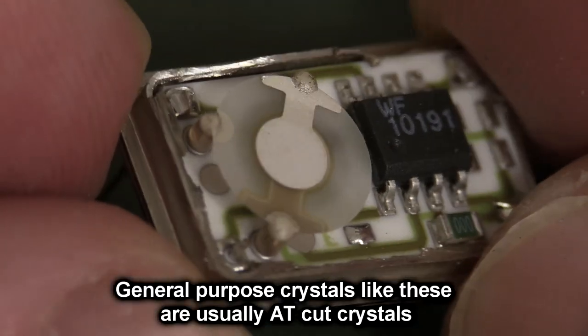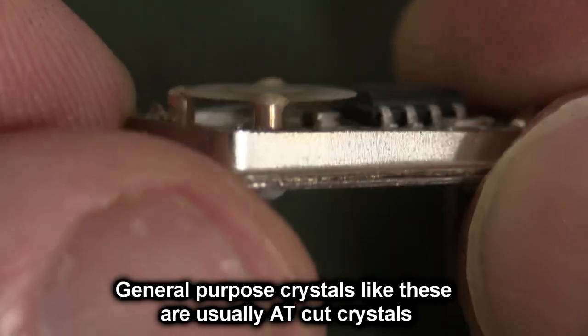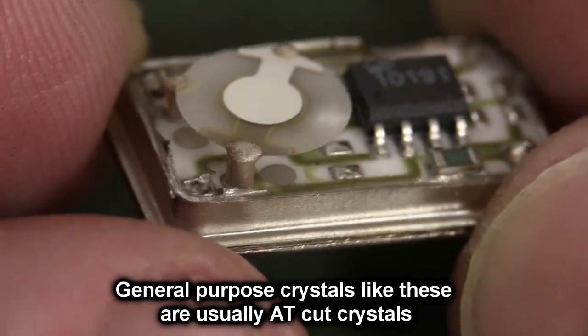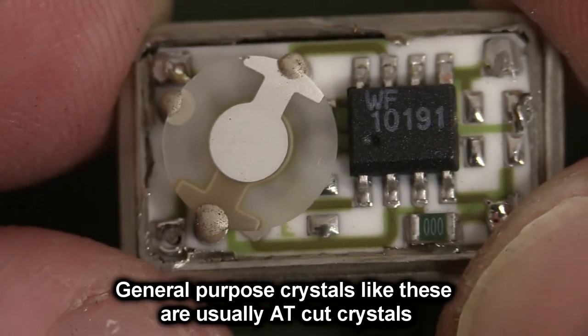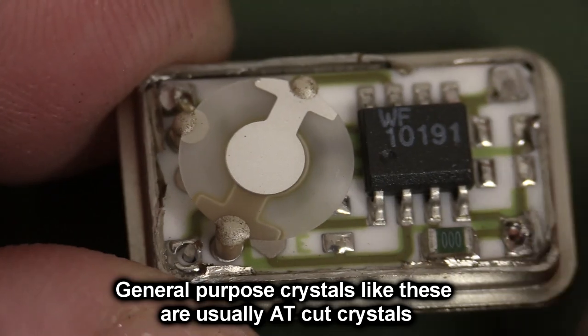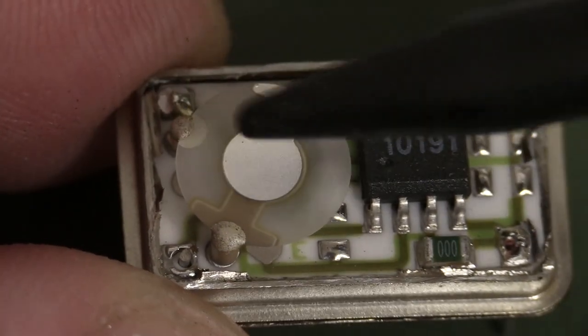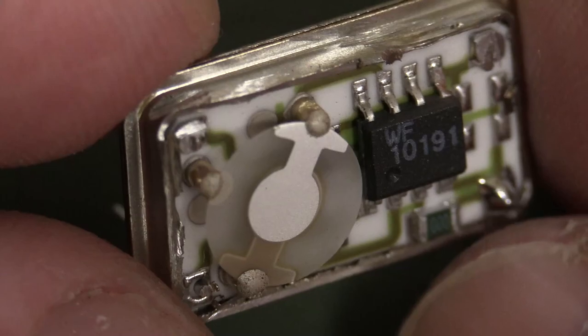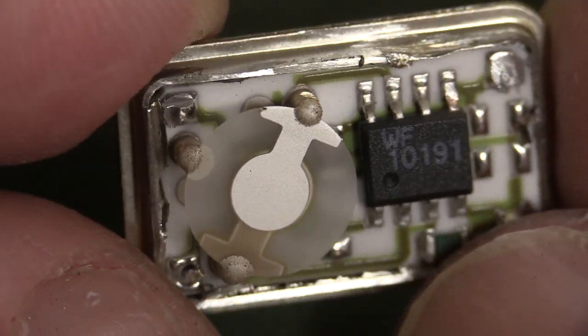Mounted in three places, which is interesting. The ones inside the HC-49U package only have two mounts on them. This one has a third mount over here. Wonder why?